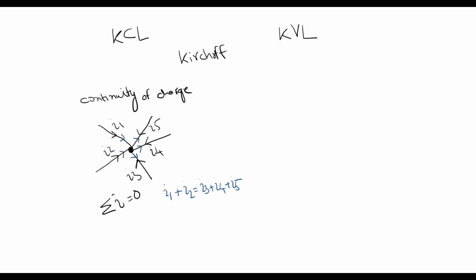So we can consider any direction for the current as long as we remain consistent—that if current moving towards the node is assumed as positive, then the current leaving the node must be assumed as negative. So this comes from the basic Kirchhoff's current law.